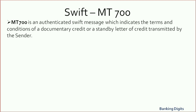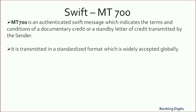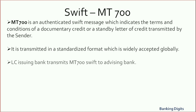We do not need to further check for any authentication or genuineness. A letter of credit or SBLC can be transmitted through MT700. The format of MT700 is standard across all countries globally. The LC issuing bank issues or transmits the LC to the beneficiary's bank, which is called the advising bank, and the advising bank further advises the LC to the beneficiary.